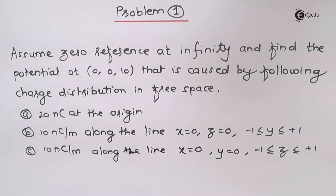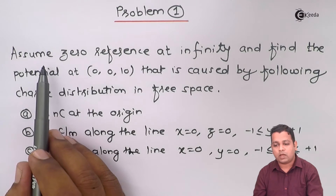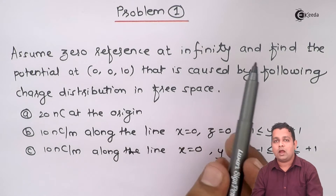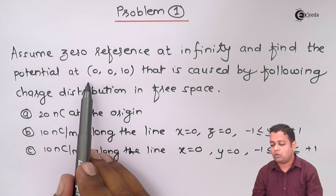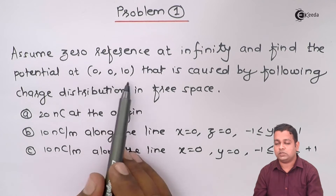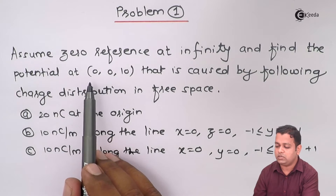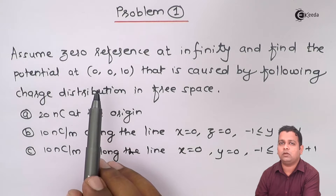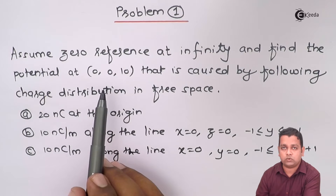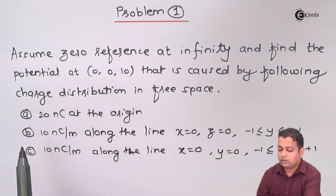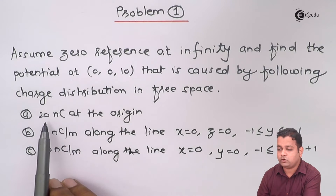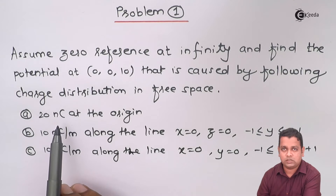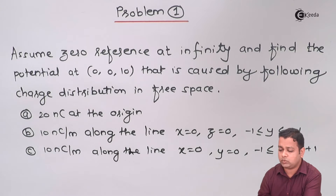Reading the problem statement, the information we need is about the location of the source and location of the field point. We have first the assumption that zero reference is at infinity, and the potential we have to find at coordinate (0, 0, 10). This is the field point — we generally represent the field point by point P. These coordinates are given to us, and at this field point, whatever potential we measure is because of certain sources. In part A, the source is at the origin with magnitude 20 nanocoulombs — it is a point charge, so the simple formula of potential due to a point charge applies.